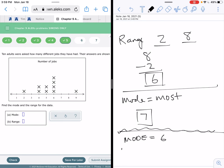And then my range is going to be the upper bound minus the lower bound. Well, the upper bound is nine and the lower bound is two. So it's just nine minus two and nine minus two is seven.